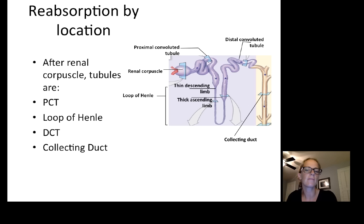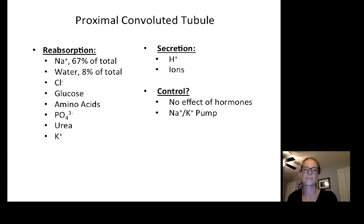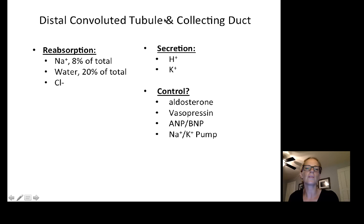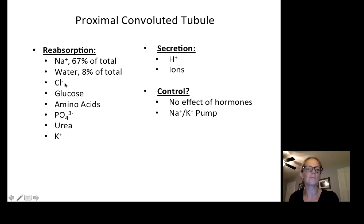We'll talk about reabsorption by location. The proximal convoluted tubule reabsorbs a lot of salt, a little bit of water, some chloride, all the glucose possible, amino acids, phosphate, urea, and potassium. The loop of Henle reabsorbs about 25% of the total salt, about 15% of the total water, and some chloride. The distal convoluted tubule and collecting duct reabsorb more salt — about 8% of the total — more water, and more chloride. The majority of reabsorption happens right away in the proximal convoluted tubule.